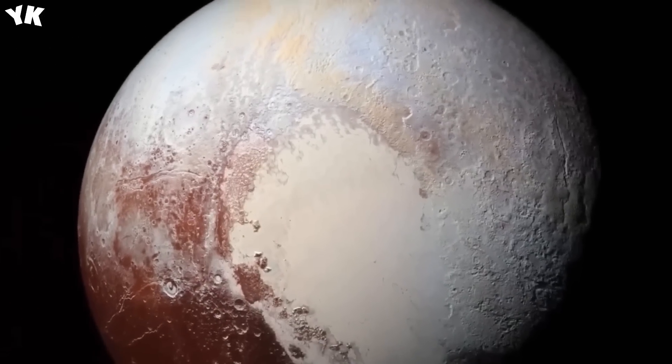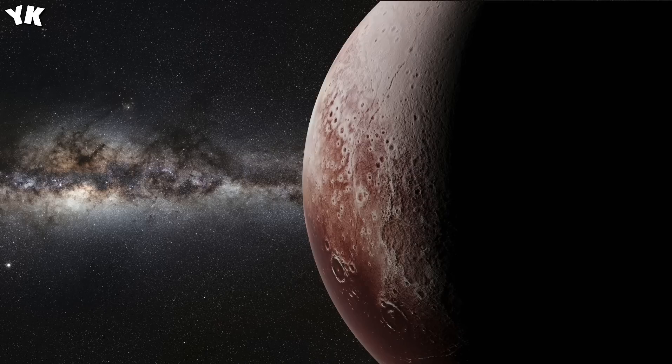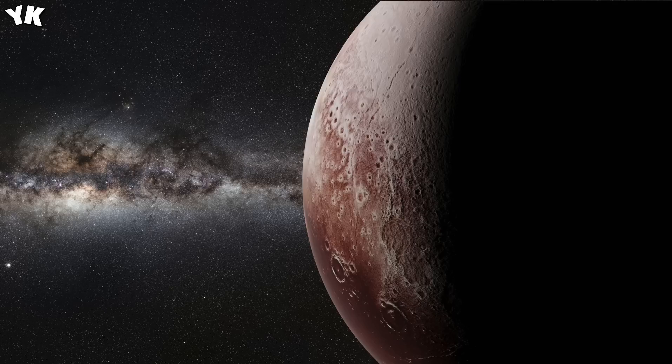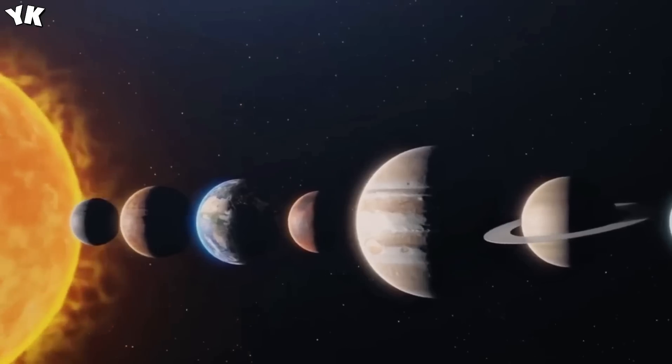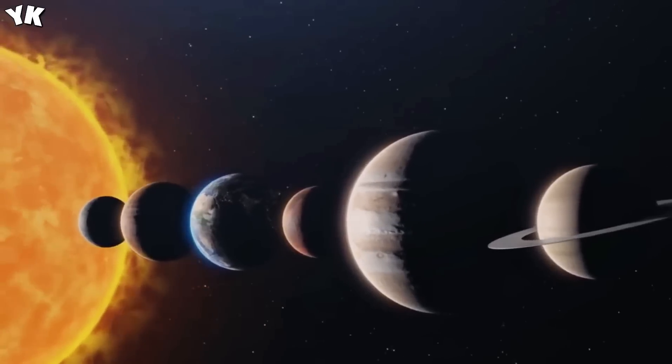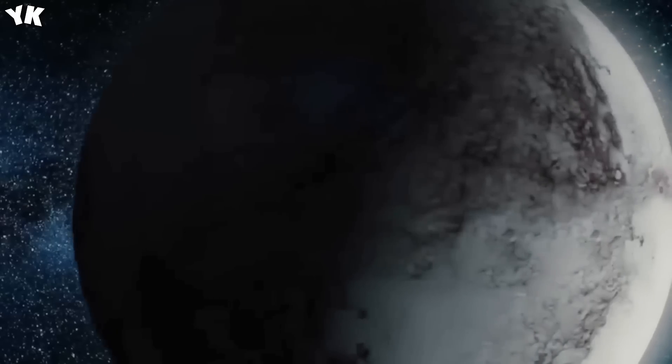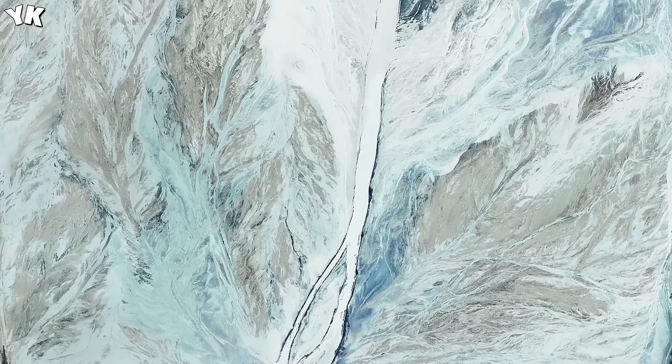Understanding the gravitational influences of giant planets on Pluto's orbit provides valuable insights into the broader dynamics of the solar system. It demonstrates how each planet's presence and position can affect the stability and trajectory of other bodies. Despite these complex forces, major astrophysicists are expressing concerns about a potential collision between Pluto and Neptune, raising questions about why such a collision is now a topic of concern.